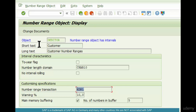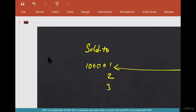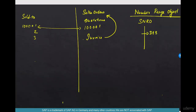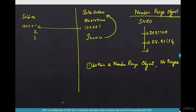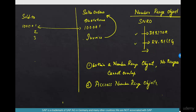What you have to understand is that for a particular number range object — say DEBITOR, which is the number range object for customer master — within that object, you cannot have overlapping number ranges. For sales documents the object is RV_BELEG, and for different kinds of documents there are different number range objects. Within a number range object, number ranges cannot overlap, but you can have the same number range in DEBITOR and also in sales documents.